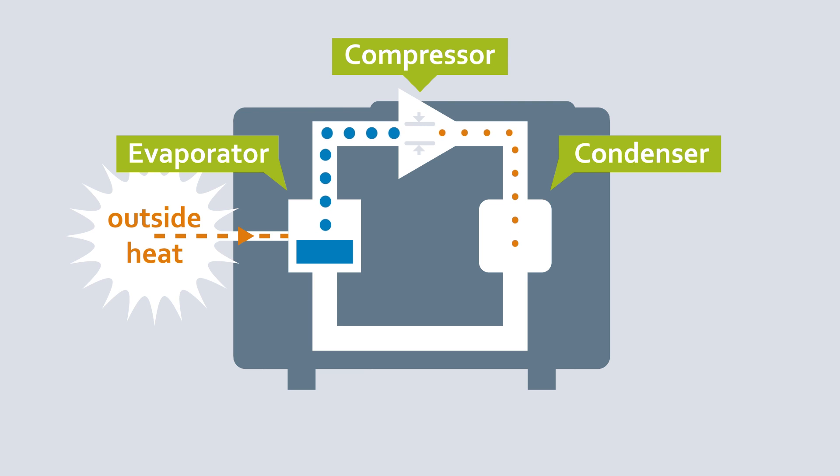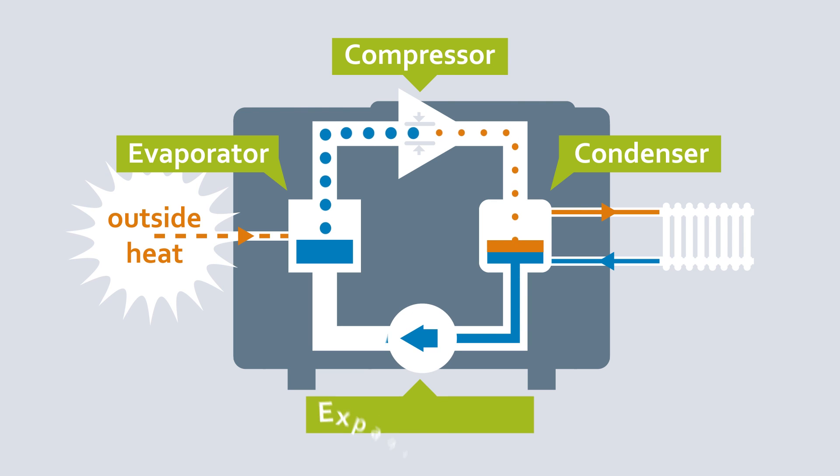In the condenser, the hot gas then heats the water in the heating circuit or the hot water tank. The gaseous refrigerant condenses again and returns to the evaporator via the expansion valve, and the cycle is repeated.